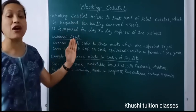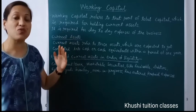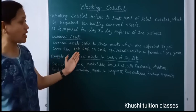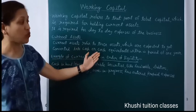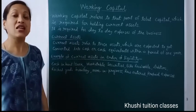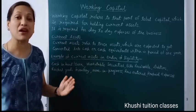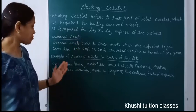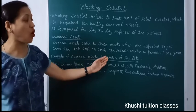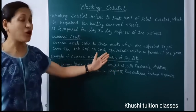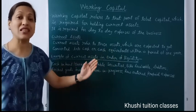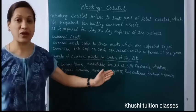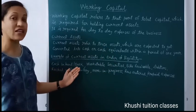Current asset is part of working capital, so first we see what is a current asset. It refers to those assets which are expected to get converted into cash or cash equivalents within a period of one year. Assets that we can convert into cash within one year are called current assets. Now, examples of current assets in order of liquidity — order of liquidity means how quickly we can convert an asset into cash.